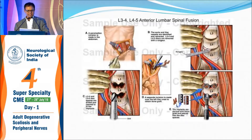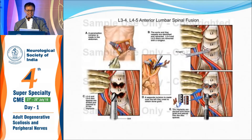The problems with doing ALIF are that one has to manipulate the large vessels. For L3-4 or L4-5, one has to dissect the aorta and vessels, requiring an access surgeon — one cannot do it independently, needing a vascular or general surgeon. This can be done open or laparoscopically. The risk of vascular injury and blood loss is higher. Because of sympathetic plexus damage, the chances of retrograde ejaculation are higher, especially in males. So this approach, though done earlier, is not popular nowadays.